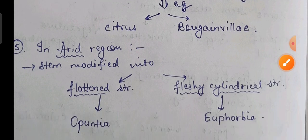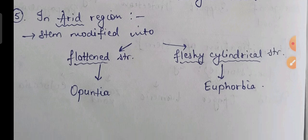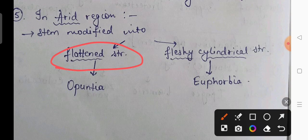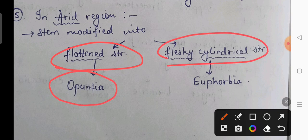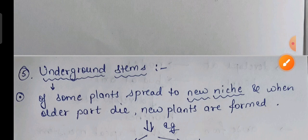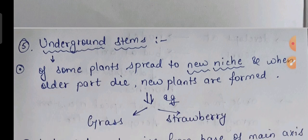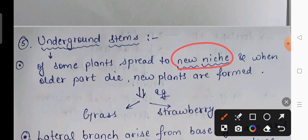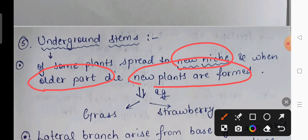Another stem modification is seen in arid regions. The stem can become completely flattened — for example in Opuntia — or form a fleshy cylindrical structure, as in Euphorbia. Underground stems are also seen in some plants, which spread into new areas. When the older part dies, new plants arise from the newer parts. This is seen in grasses and strawberry.